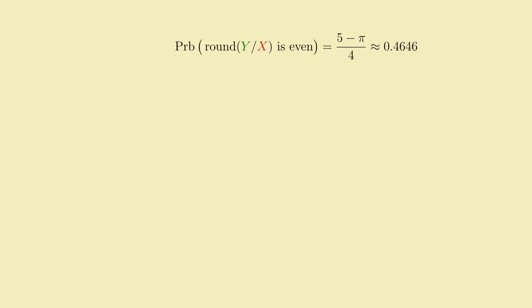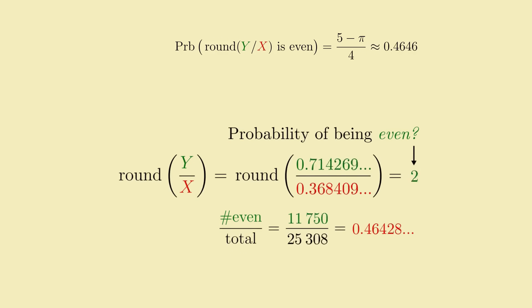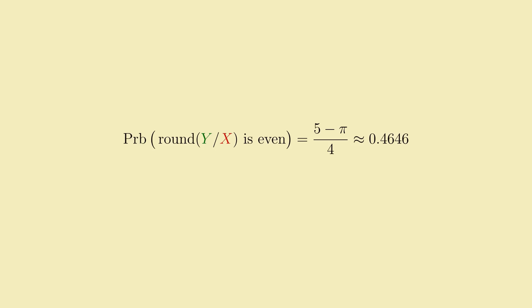Which, if we compare to our empirical test with 100,000 rolls, lines up quite nicely. So yeah, beyond all expectation, the probability of rounding a random ratio to an even number involves pi. Pretty weird.